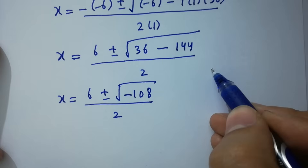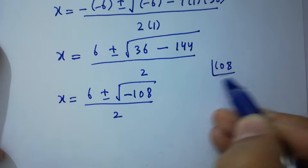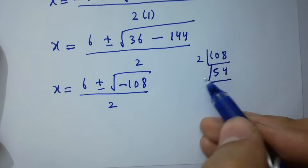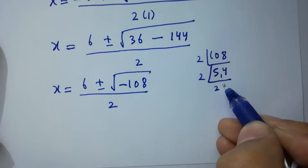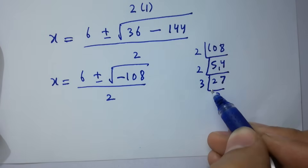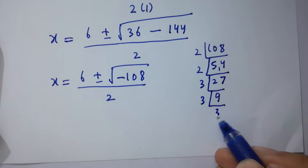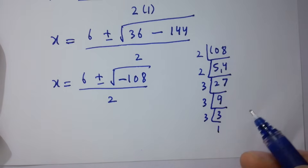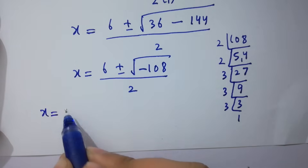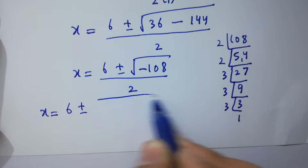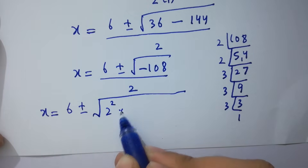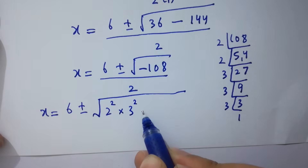Now factoring 108: 108 equals 2 squared times 3 squared times 3. So we have x equals 6 plus or minus the square root of 2 squared times 3 squared times 3 times negative 1, all over 2.